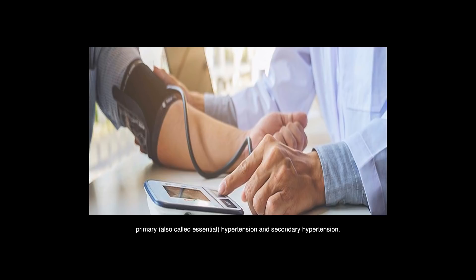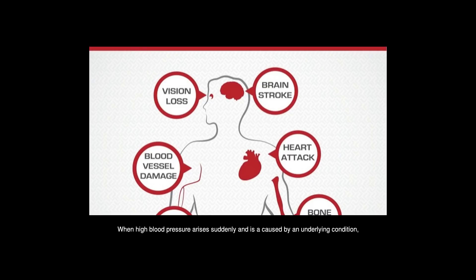There are two types of high blood pressure: primary, also called essential hypertension, and secondary hypertension. Primary hypertension tends to develop gradually over a long period of time. When high blood pressure rises suddenly and is caused by an underlying condition, it's called secondary hypertension.